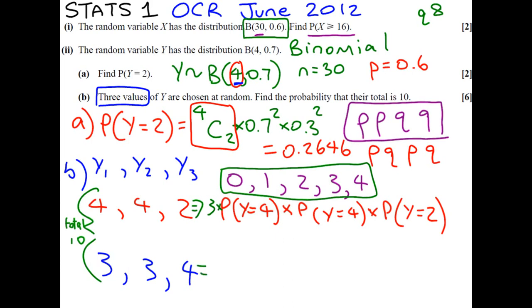Same for this one. We can arrange those numbers three different ways, 3 factorial, or 3 choose 1, whichever way you want to think about it. So the probabilities that we're multiplying, in this case the probability that y equals 3, times the probability that y equals 3, times the probability that y equals 4.